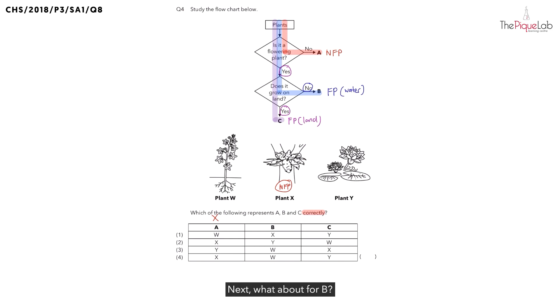What about for B? We know from the flowchart B is a flowering plant that lives in water. Let's check which of the plants here are flowering and live in water. We know it must be plant Y. We can write this down. We know that plant Y is a flowering plant and it lives in water. The answer for B must be plant Y.